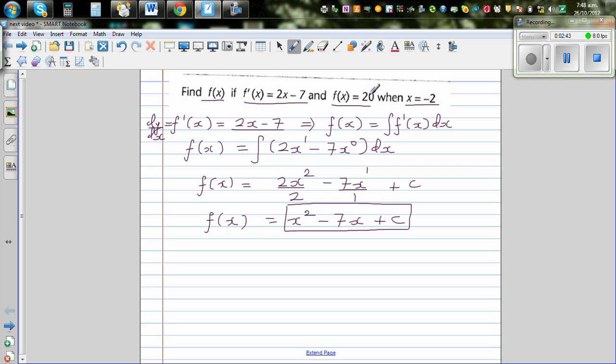Now you have to just put this value back in this equation. So we can say f(x) is 20, so I can say 20 is equal to x is negative 2, so I'll put this in the bracket, negative 2 squared minus 7 times negative 2 plus c.